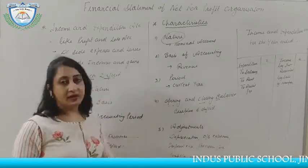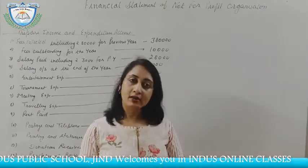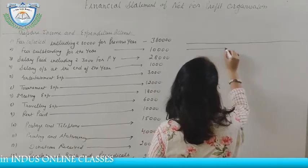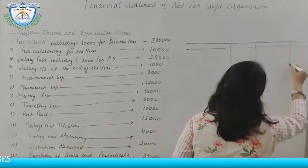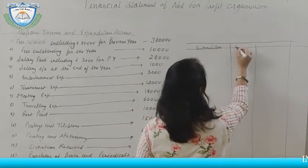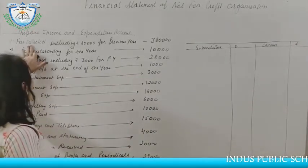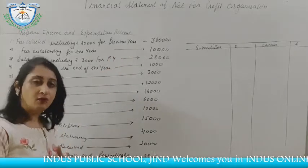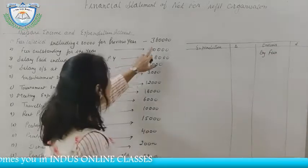Now we will do a simple practical to understand how to prepare the Income and Expenditure Account. First, we make the format with expenditure on the debit side and income on the credit side. The first item is fees collected — total rupees 3,80,000, including rupees 80,000 for the previous year. Since this is income for the organization, we take it on the credit side under 'By Fees'.